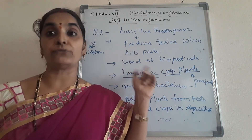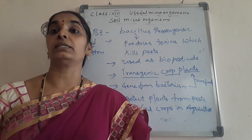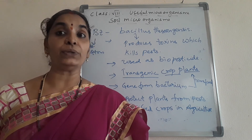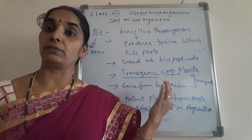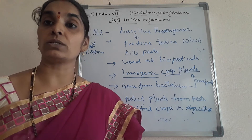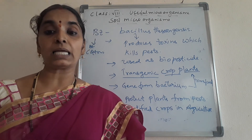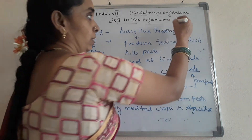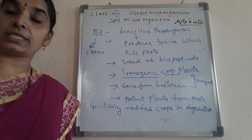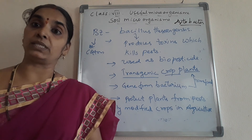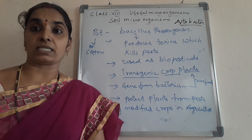We have also learned about the usefulness of microorganisms for farmers — for developing different types of crops and addressing nitrogen deficiency in soil. Bacteria like Nostoc, Anabaena, Rhizobium, and Azotobacter are examples of soil microorganisms that improve soil fertility by converting atmospheric nitrogen into nitrates and supplying them to plants.